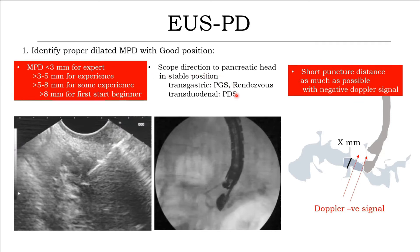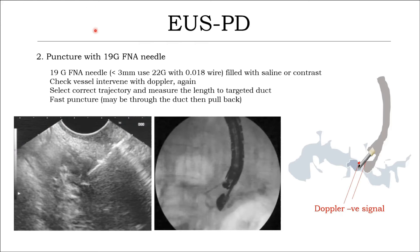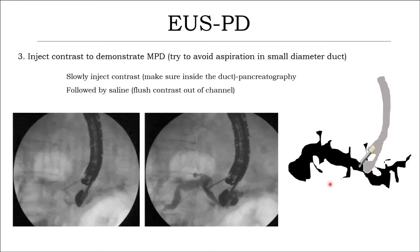Keep the scope direction toward the head of the pancreatic duct. Keep the puncture distance as short as possible and confirm a negative Doppler signal. Step 2: puncture with a 19-gauge needle. Remove the stylet, fill with saline or contrast, check for vessels in between, then correct the direction of the needle. Target the dilated MPD with a fast puncture into the duct and then pull back. When the needle tip is seen in the dilated MPD, check contrast to demonstrate the pancreatogram, followed by saline to flush the needle channel.